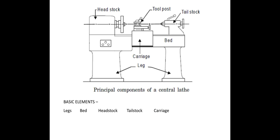Now we will see the tailstock. The function of the tailstock is to support the long workpiece during the operation. It is also used for holding cutting tools like drill bits, etc. It is a non-revolving part, so it is called the dead center. The tailstock is located at the extreme right end of the machine, mounted on the bed, and it can be moved on the bed using the guideways.